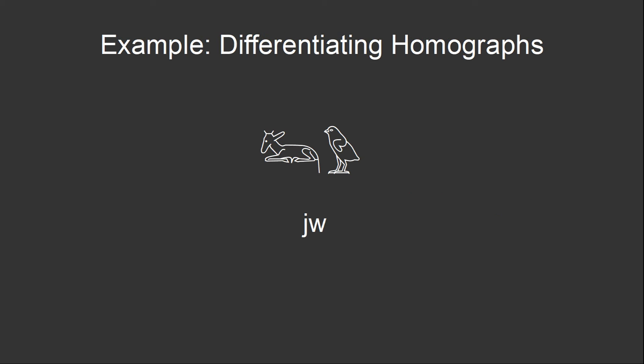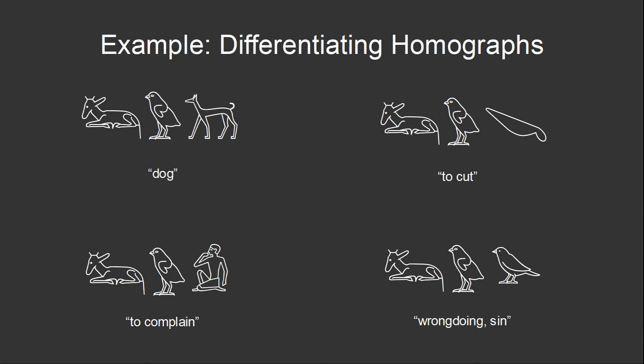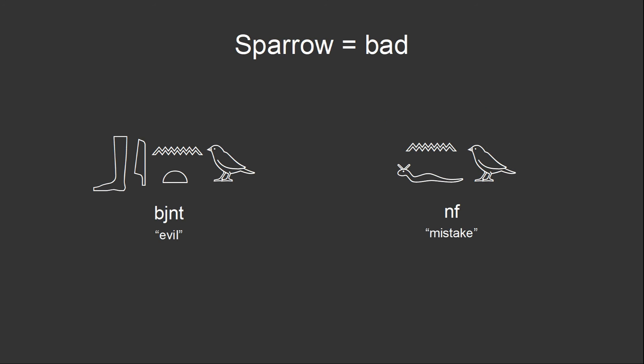Here's a great example of determiners distinguishing words that would otherwise be identical. The words for dog, to cut, to complain, and wrongdoing all contain the same two phonetic characters, a biliteral eew and a phonetic complement oo, but they have different determiners. The word dog is written with the determiner dog, which is pretty self-explanatory. The word cut is written with the determiner knife, again, pretty obvious. The word complain is written with the determiner of a man with a hand to his mouth. This is used as a determiner for words for speaking, as well as words for eating and drinking. Finally, the word wrongdoing is written with the determiner sparrow. The sparrow is used as a determiner for words relating to badness, such as binet, meaning evil, or neph, meaning mistake. I'm not sure what sparrows did to the Egyptians to deserve it, but there you go.